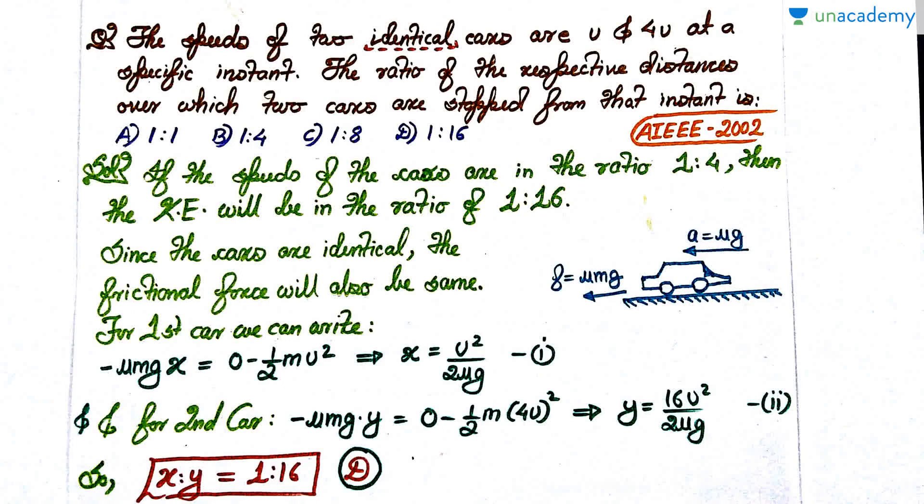Let's move on to the next one. This is also similar to the previous question in the sense that it can be solved both using work, power, energy as well as rectilinear motion concepts. The speeds of two identical cars are U and 4U at a specific instant.